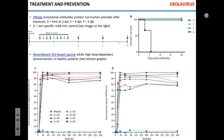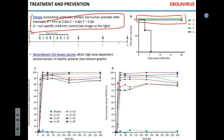Both treatment and prevention are now available for Ebola. Monoclonal ZMapp antibodies show an incredible level of protection. Studies in monkeys demonstrated that administration of ZMapp in triplicate protected 100% of animals from lethal Ebola infection. We now also have a vaccine.